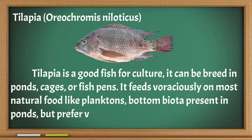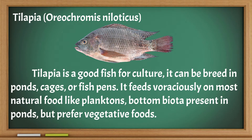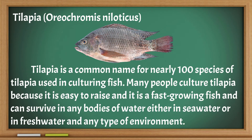Tilapia is a good fish for culture. It can be bred in ponds, cages, or fish pens. It feeds voraciously on most natural food like planktons, bottom biota, and detritus in ponds, but prefers vegetative foods. Tilapia is a common name for nearly 100 species used in culturing fish. Many people culture tilapia because it is easy to raise, fast-growing, and can survive in any body of water, either in seawater or freshwater and in any type of environment.